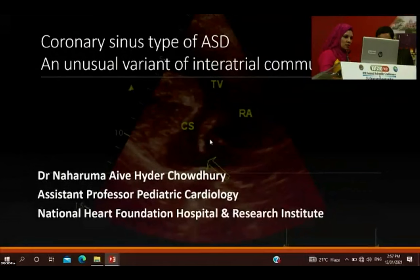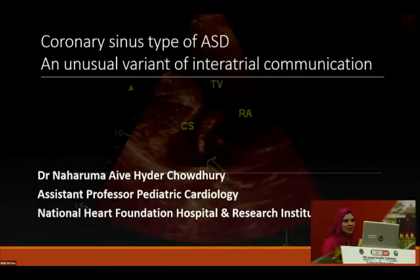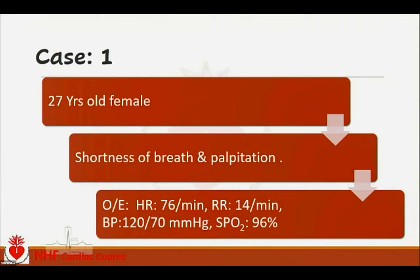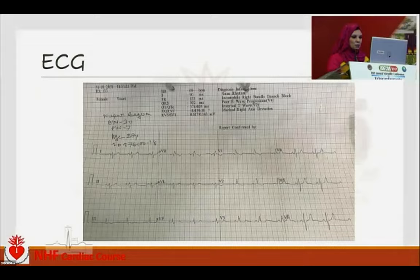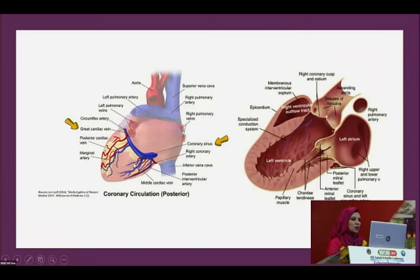Assalamu Alaikum. I am Dr. Naharuma Albihaydar Choudhury, Assistant Professor of Pediatric Cardiology, National Heart Foundation. It is an honor to present before this gathering. My topic is coronary sinus type of ASD: an unusual variant of interatrial communication. I will present three consecutive cases. First, a brief review of coronary sinus anatomy: the coronary sinus is located in the coronary sulcus of the posterior atrioventricular groove; its roof forms the floor of the left atrium, and it opens into the right atrium beside the septal leaflet of the tricuspid valve, medial to the IVC.